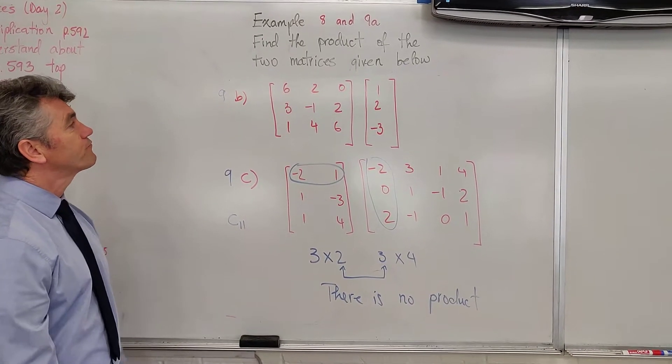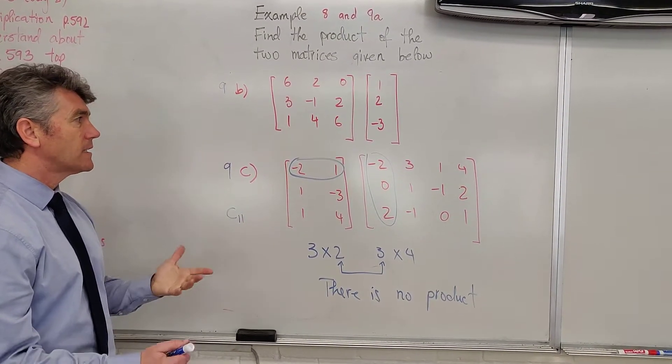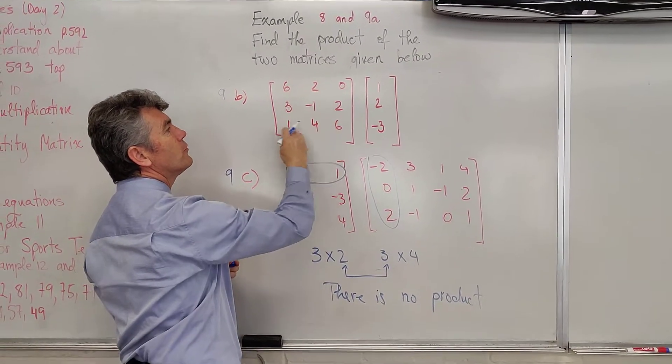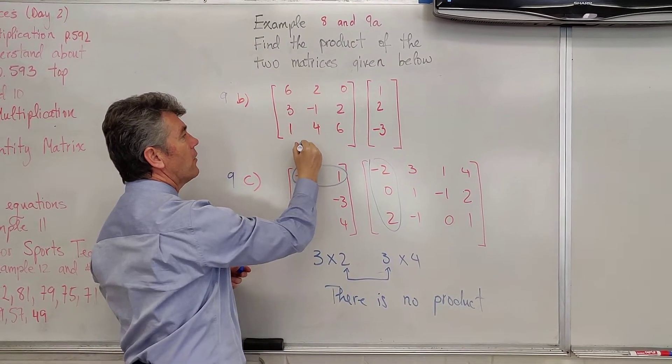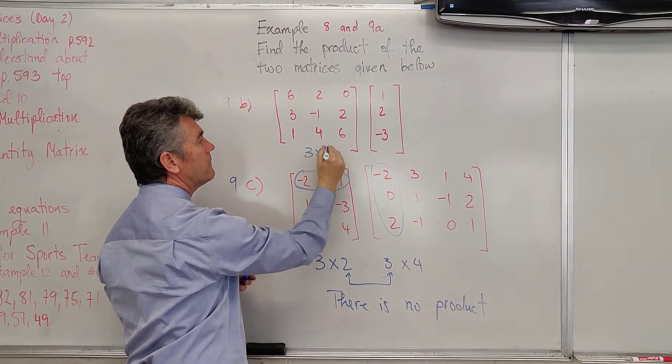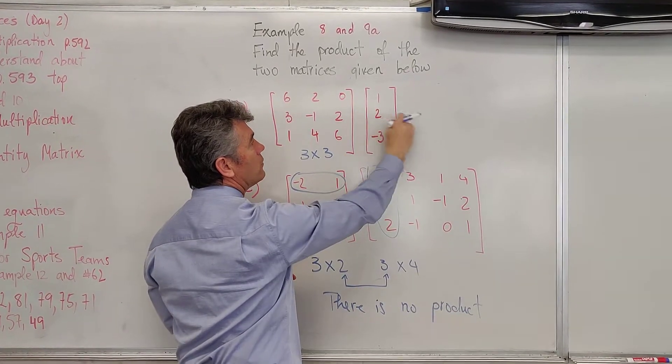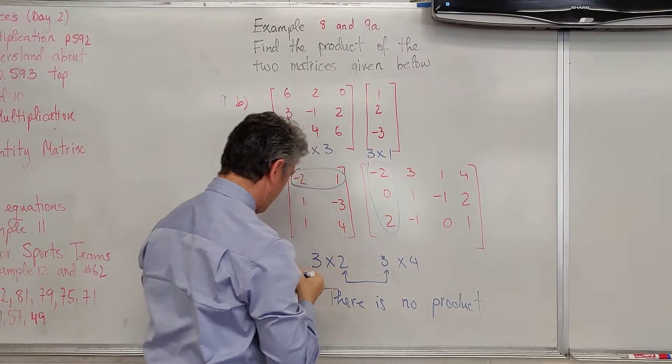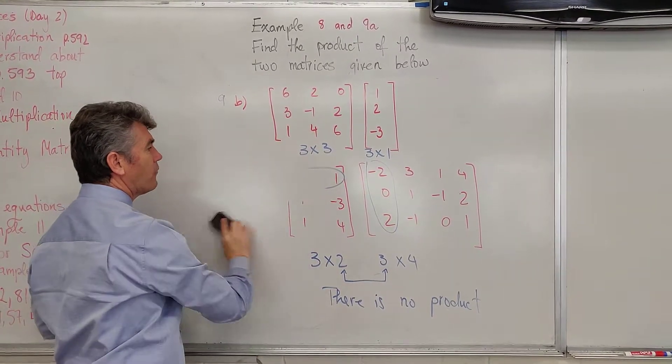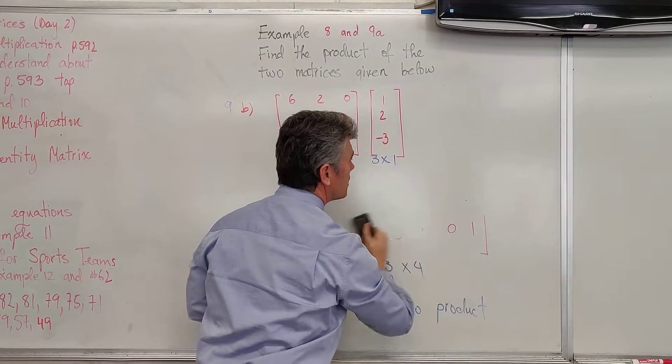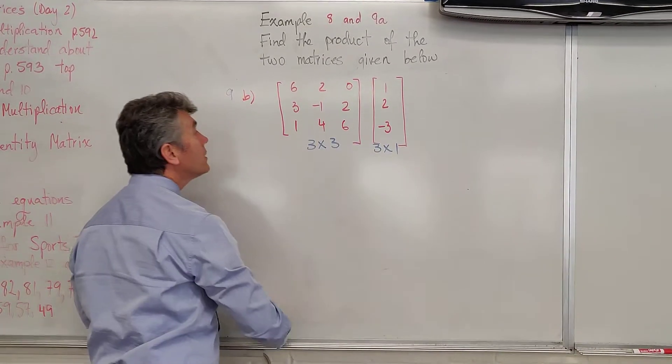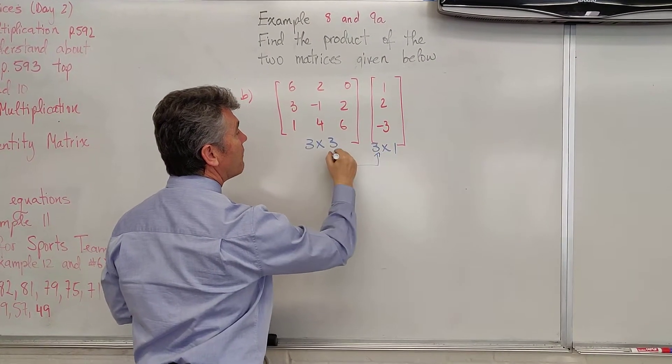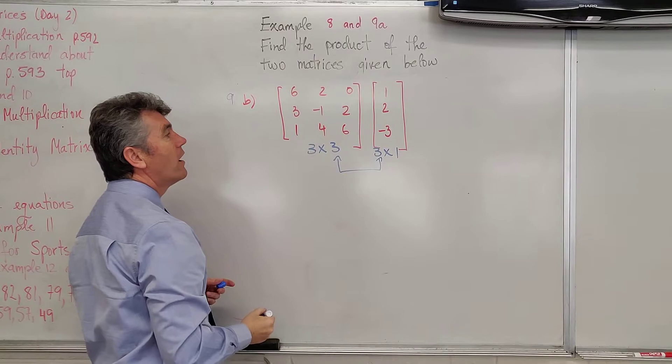9C is done. Next, 9B. As always, let's find dimensions. The first matrix. One, two, three rows. One, two, three columns. Three by three. The second matrix. One, two, three rows. One column. Let me erase the example from 9C. What can you see? You can observe that the middle dimensions once more match.